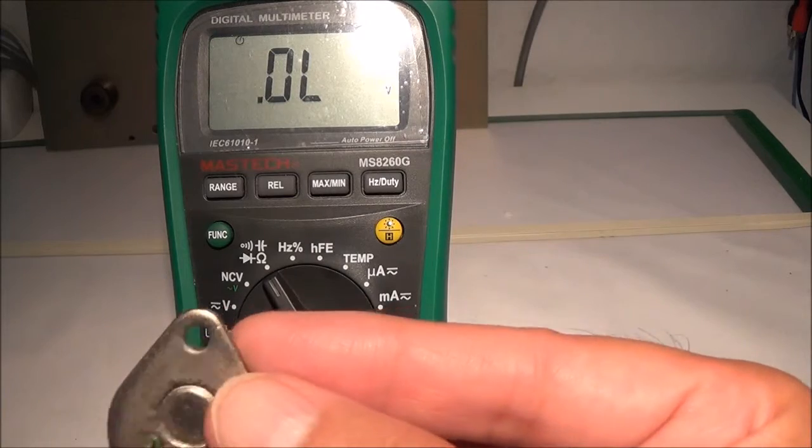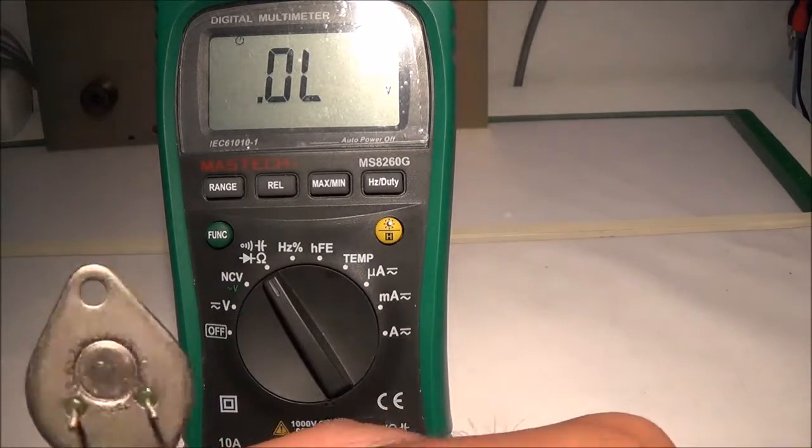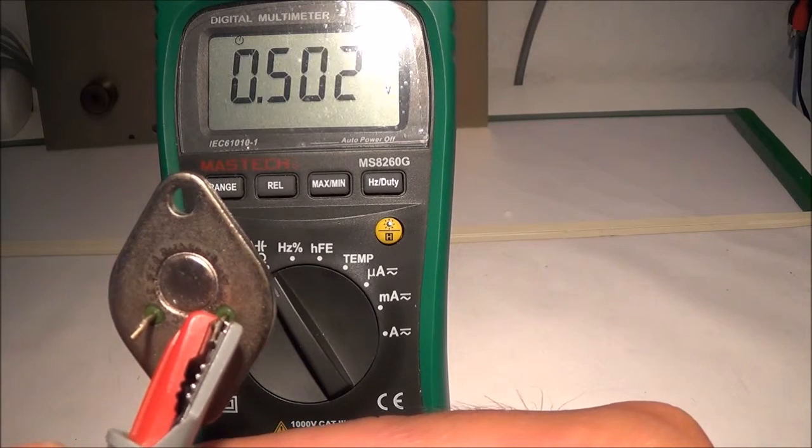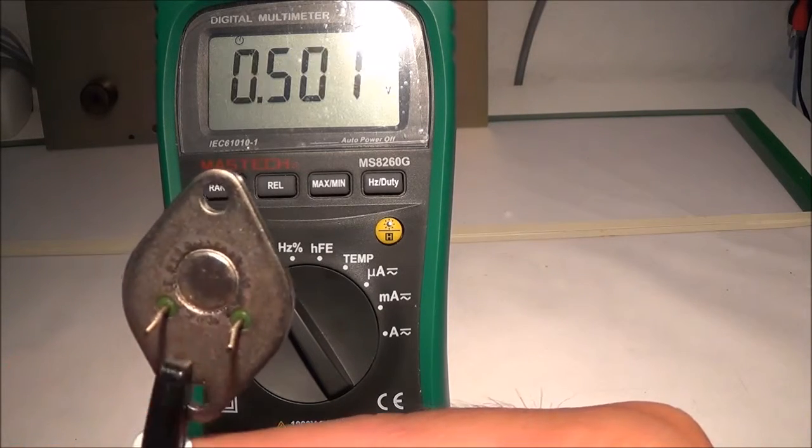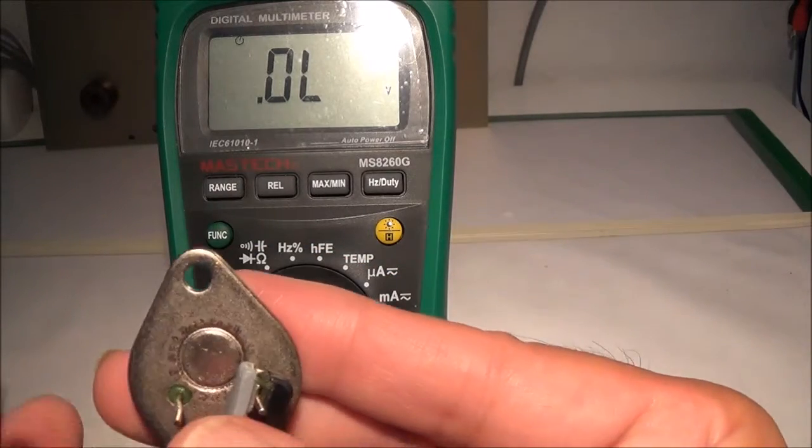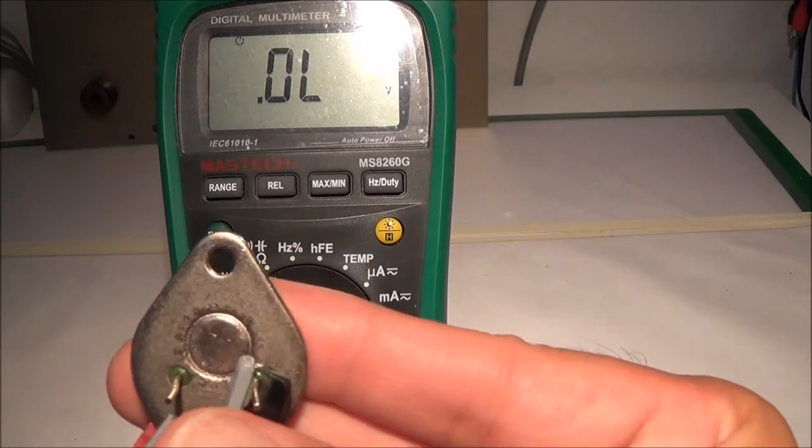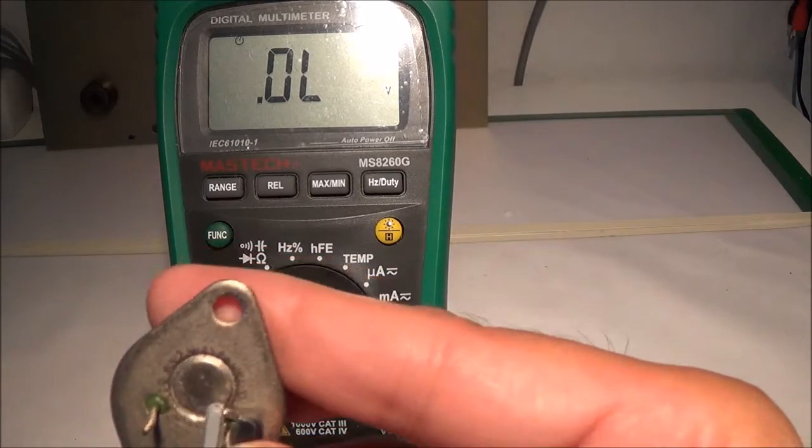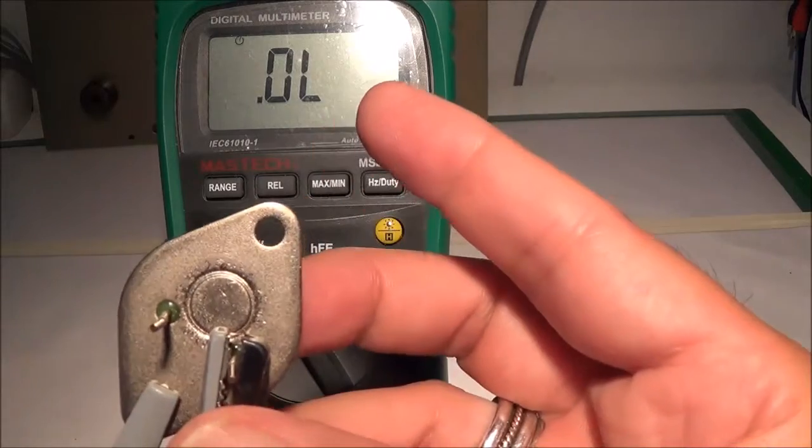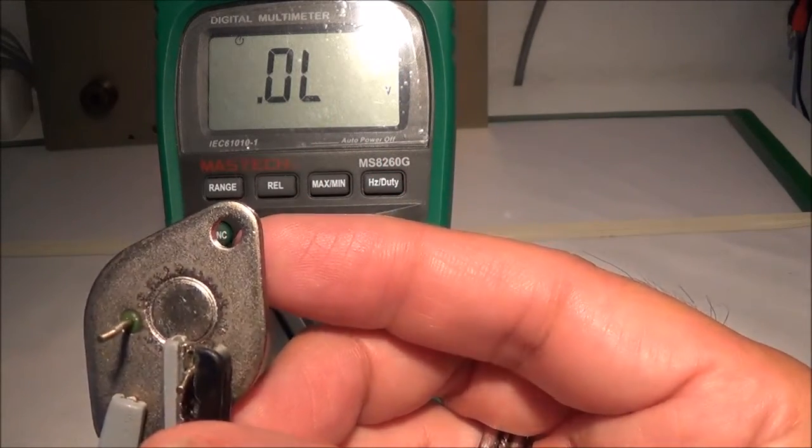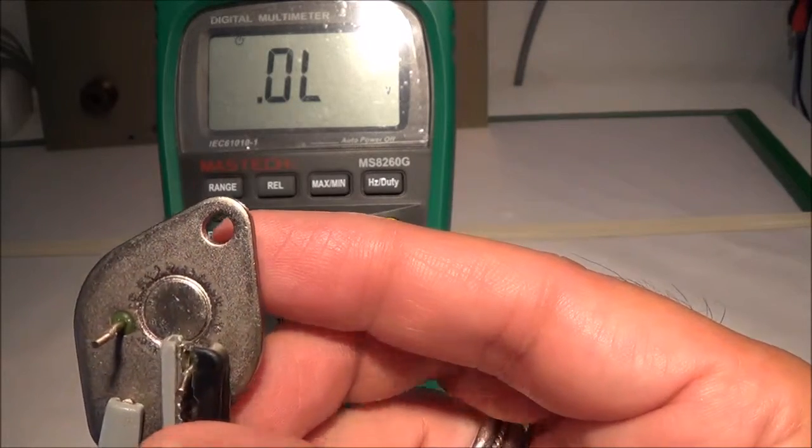And now we're going to go between the collector and the base. 0.5. Reverse leads. Basically showing open. So I would say this transistor looks like it's good.